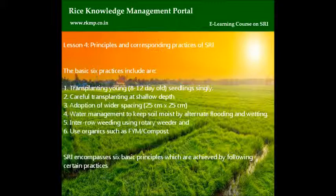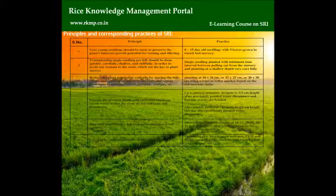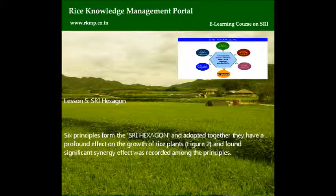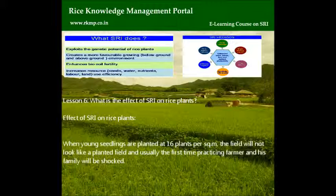SRI encompasses 6 basic principles which are achieved by following certain practices. Lesson 5: SRI Hexagon. Six principles form the SRI Hexagon and adopted together they have a profound effect on the growth of rice plants. A significant synergy effect was recorded among the principles.